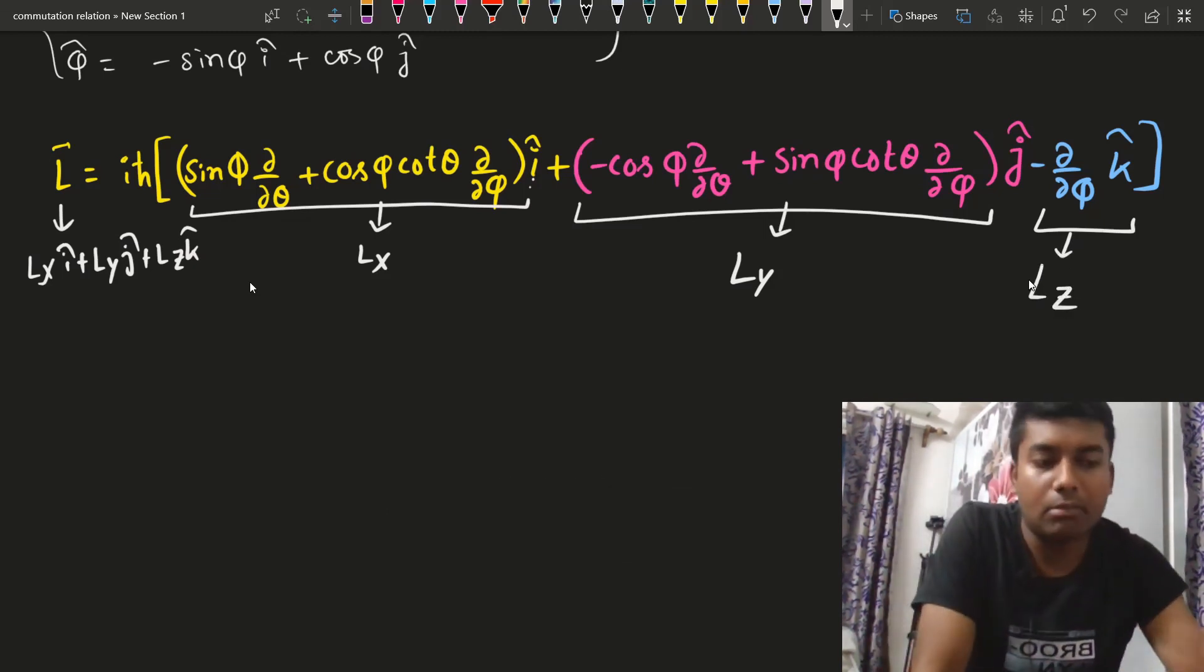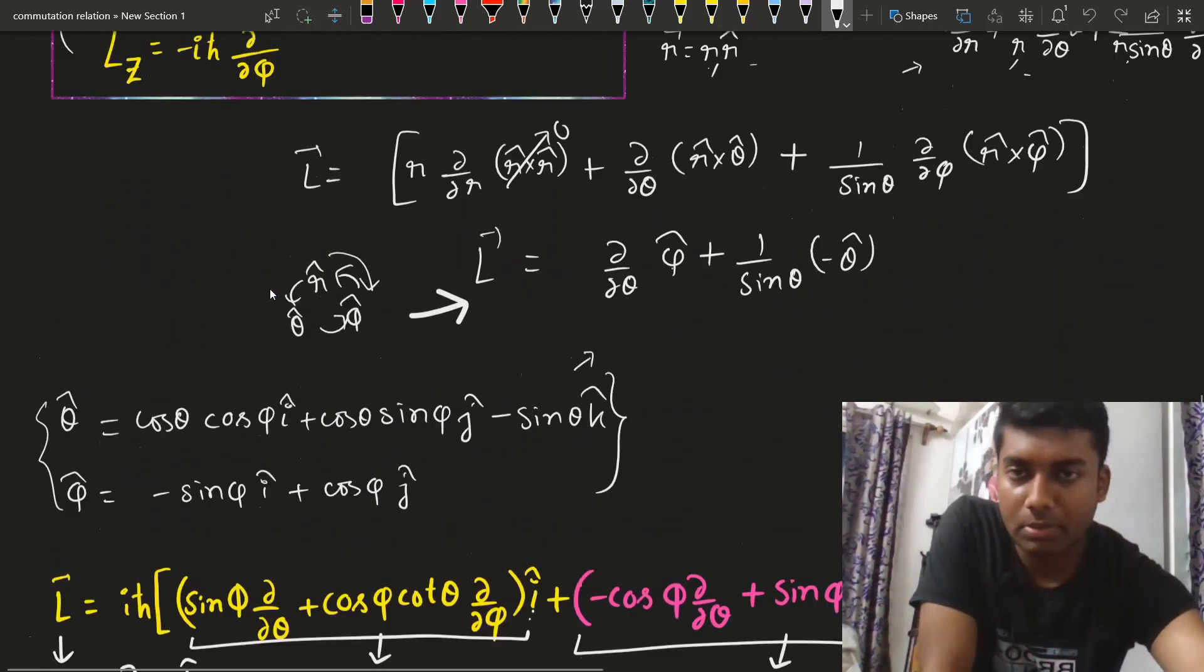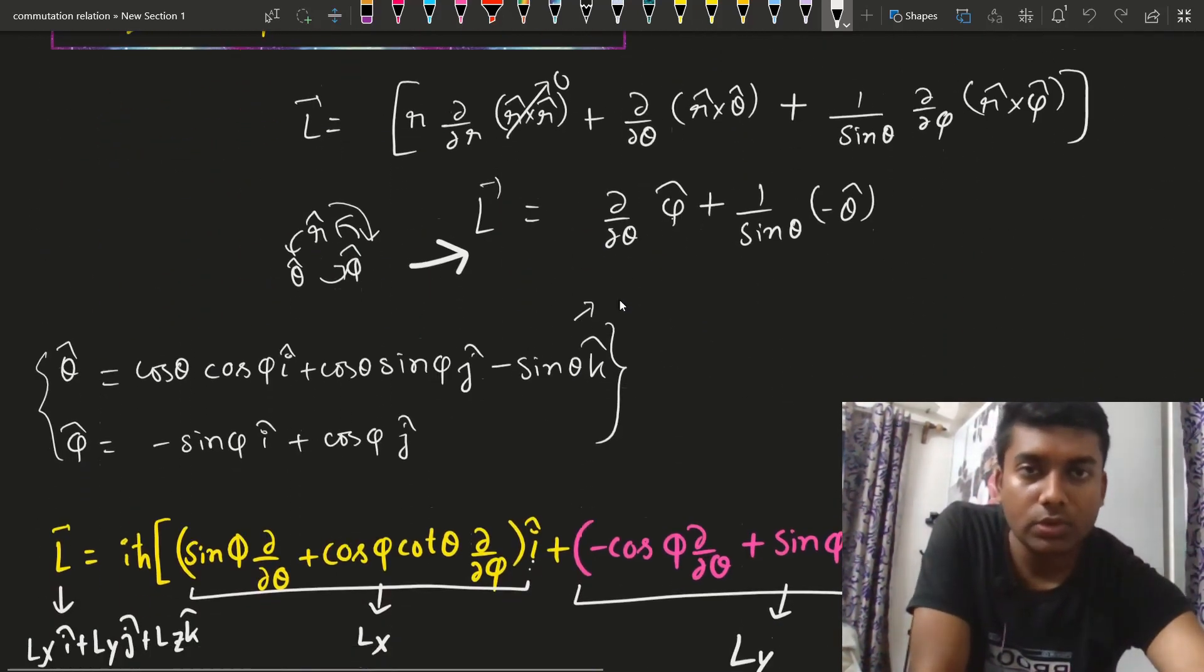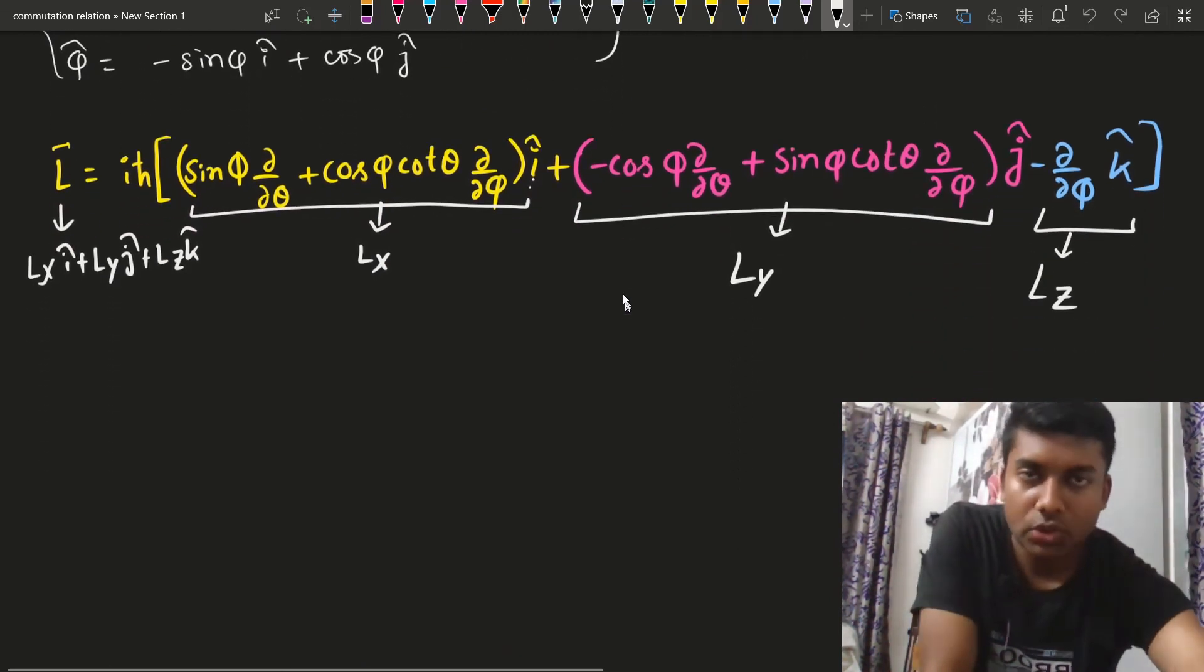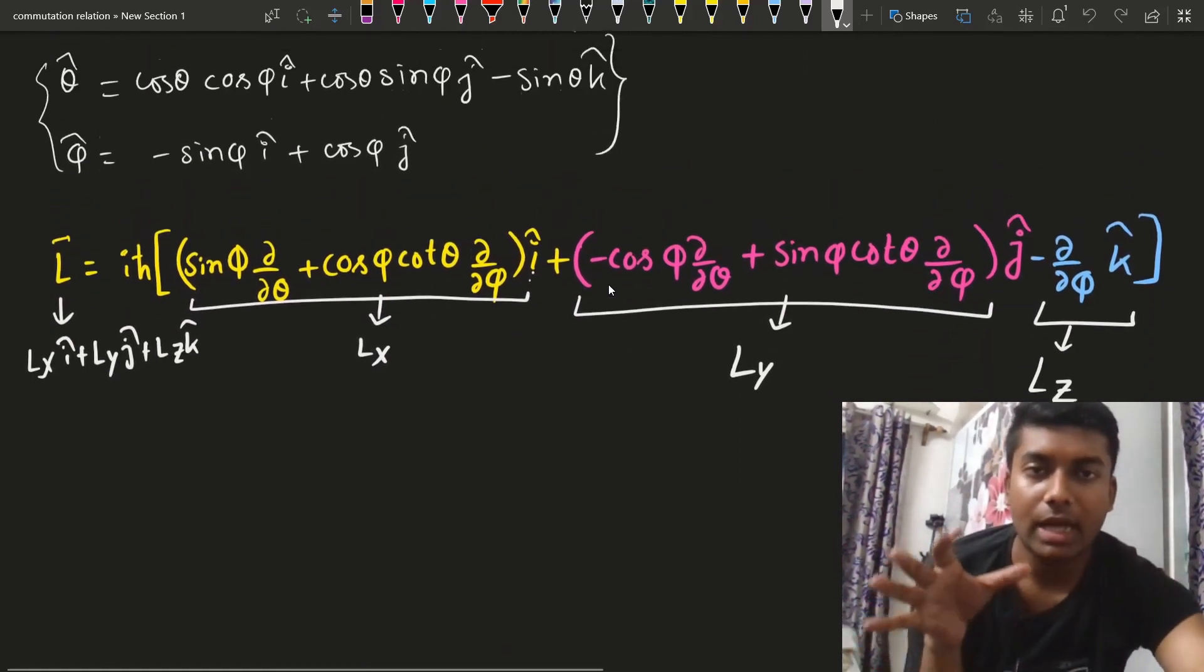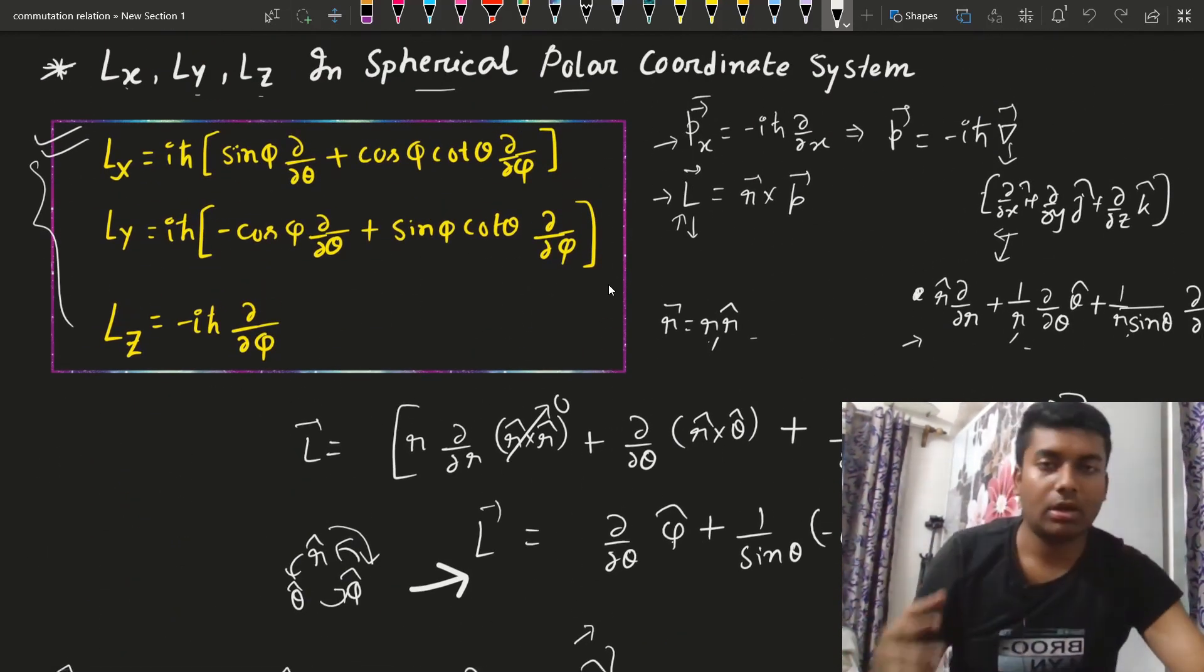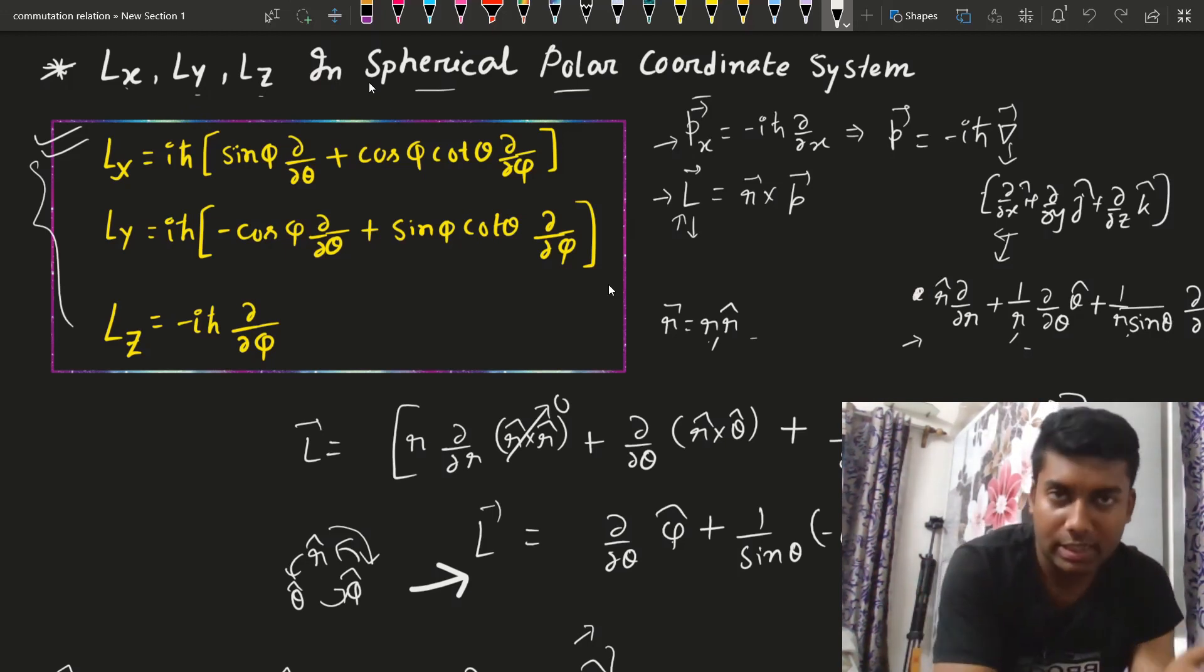Now you can easily match this result with our previous result which I have written here. These two things are just the same. So I think that you have understood that how you can find or you can evaluate the expression of l x, l y and l z in spherical polar coordinate system.